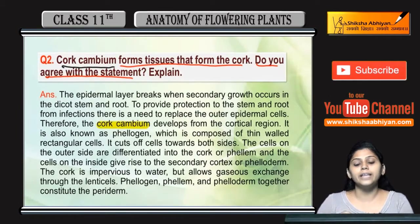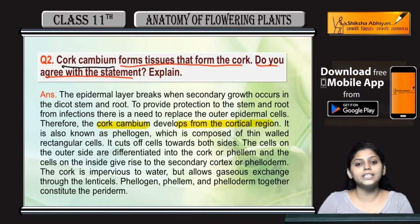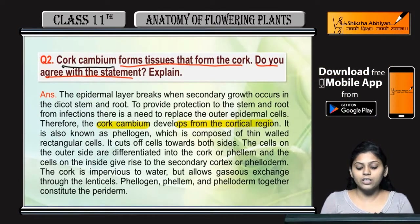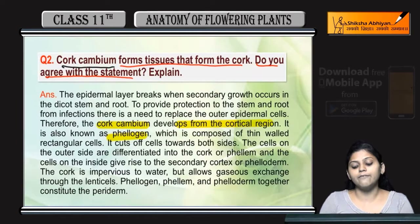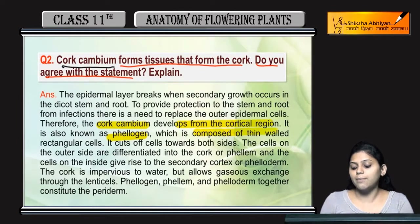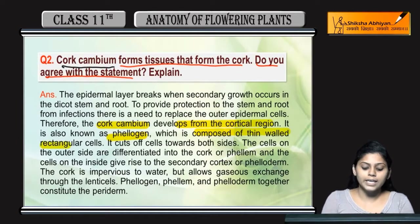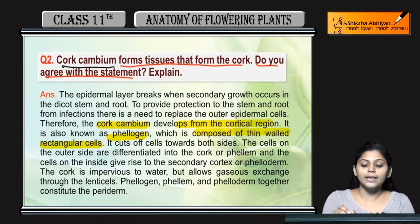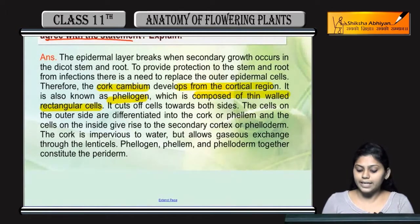The cork cambium is developed from the cortical region. This cork cambium is called phelogen. It is composed of thin-walled rectangular cells.